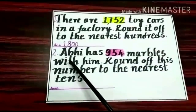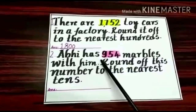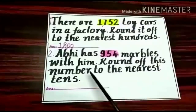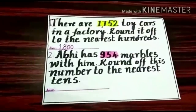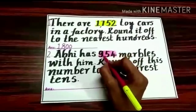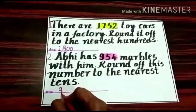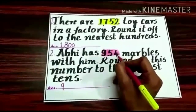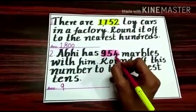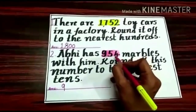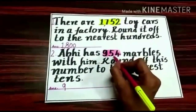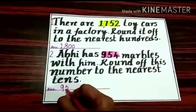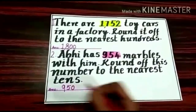Next example: Abhir has 954 marbles. Round off this number to the nearest 10s. The hundreds digit stays as it is. Now round 54 to the nearest 10: 54 lies between 50 and 60, and it is less than the middle number, so round down to the before 10 — that is 50. The answer is 950.